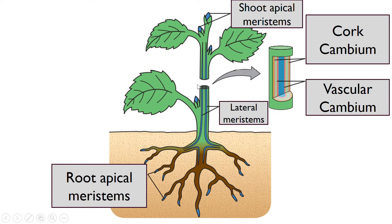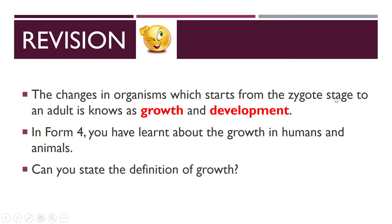If you cut the cross section of it, you will see cork cambium and also vascular cambium — these are the lateral meristems. Remember vascular tissue is about the phloem and also xylem.